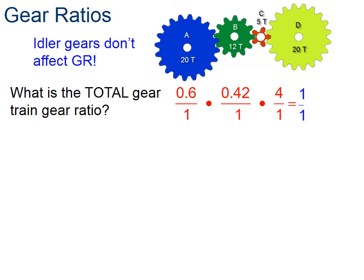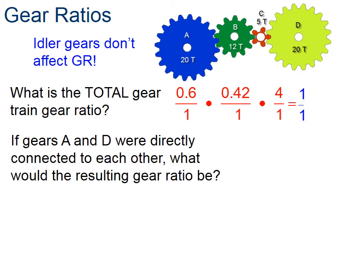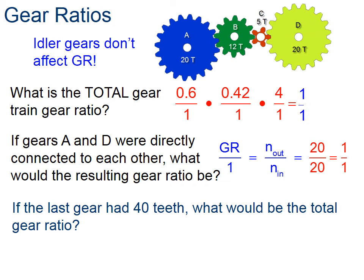But here's what makes it interesting. Those idler gears we can really ignore. So if we took the gear ratio from A to D, they have the same number of teeth, 20 and 20. So essentially, we can ignore all those idler gears. That comes in handy, but we can only do that for simple gear trains like we see here.